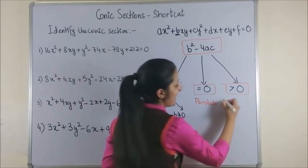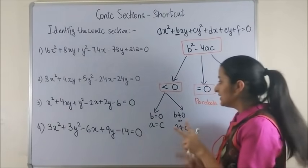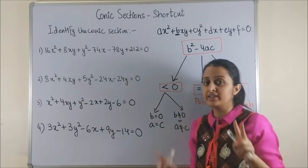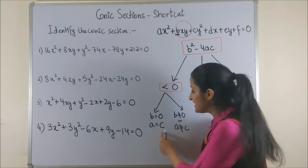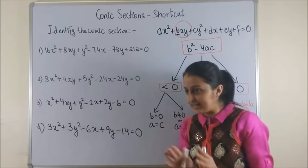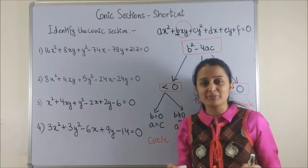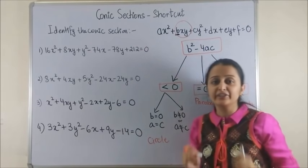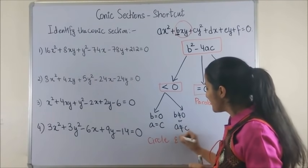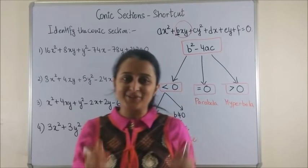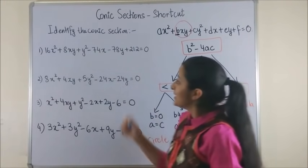However, if it is less than 0, then you might want to look at two things. First of all, if your b, this expression vanishes, and your a and c are the same, in this case it becomes a circle. Whereas if your b is pretty much present and your a and c are different, and still your discriminant turns out to be less than 0, then of course it's an ellipse. Please have a look, and now let's look at the questions one more time.